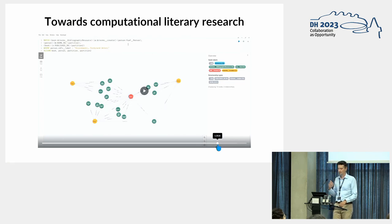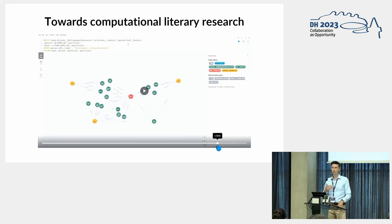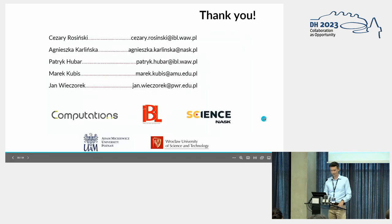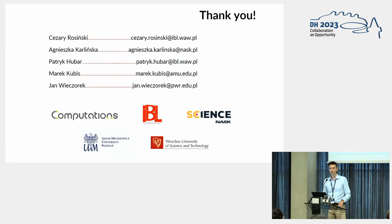After all this work, this is actually a starting point, because now we can think about what else can be added to that graph. From the top of our minds, we can use text mining and NLP activities to extract extra elements, label them properly, include them in the graph, and use query languages such as SPARQL or Cypher to perform proper computational literary research. Thank you very much for your attention.